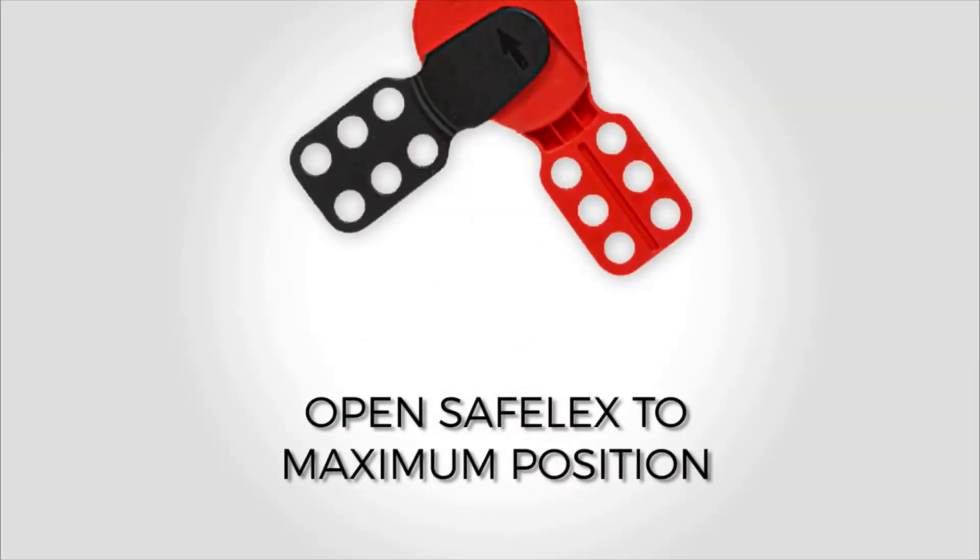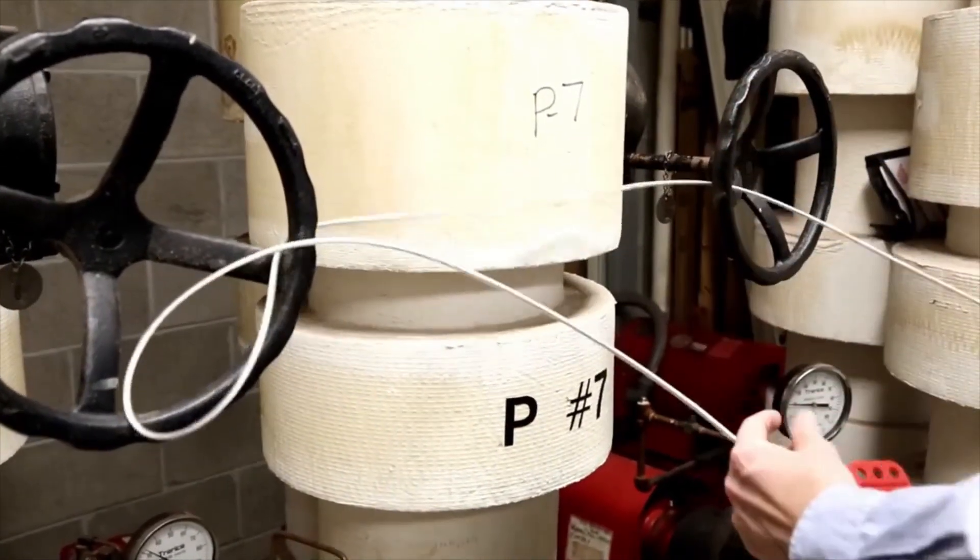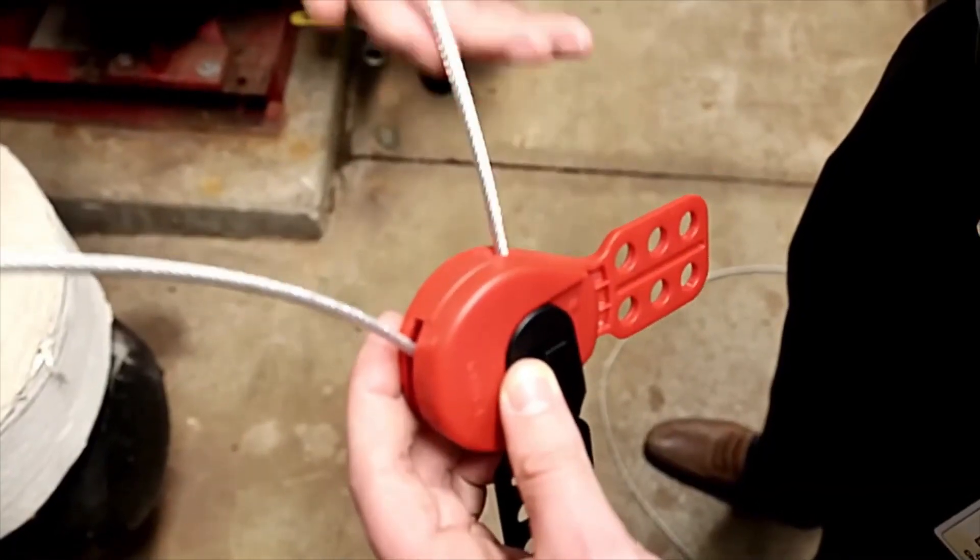Open the Safelex handle to maximum position. Pass metal cable through both valves. Thread cable back through Safelex to close loop.